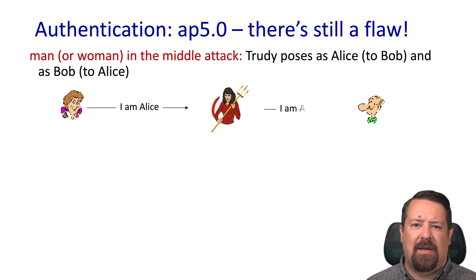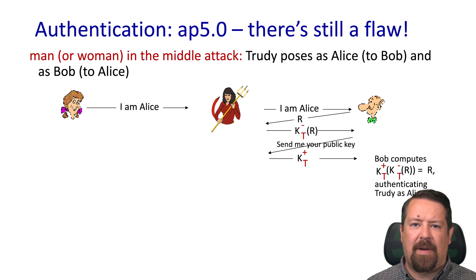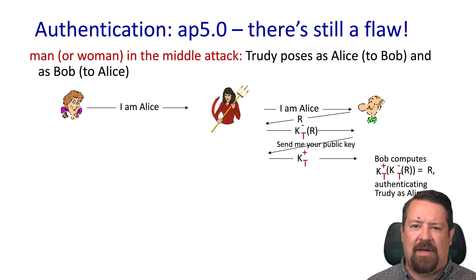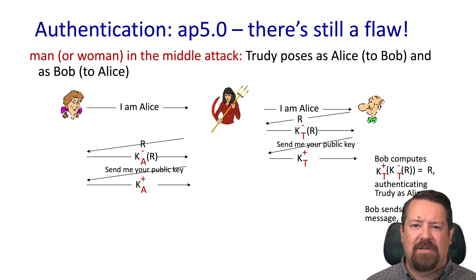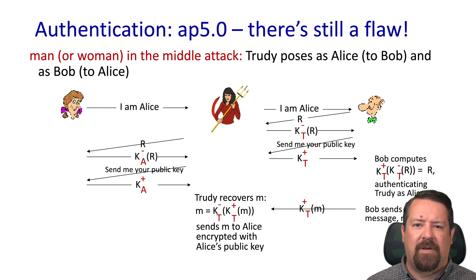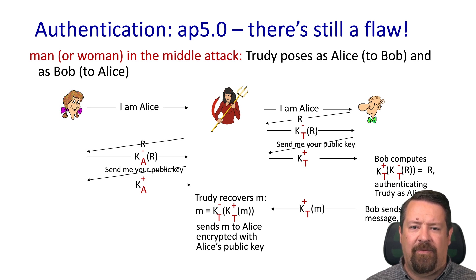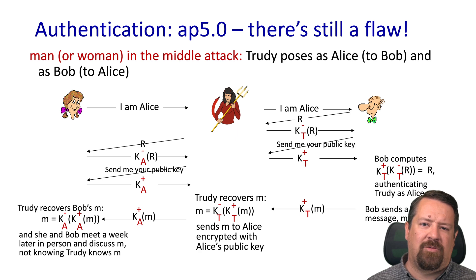Our attacker Trudy is in the middle. Alice says 'I am Alice,' Trudy repeats that to Bob. Bob sends the nonce to Trudy, who encrypts R with her own private key. Bob asks for the public key, Trudy sends hers, and the computation checks out because Trudy supplied both. Trudy can also forward the nonce to Alice and get her to encrypt it. Bob, thinking he's communicating securely, encrypts with Trudy's public key — so Trudy can decrypt, read, re-encrypt with Alice's public key, and forward it. Bob and Alice don't even know Trudy is in the middle reading their messages.